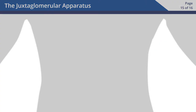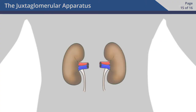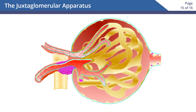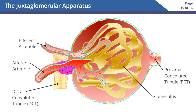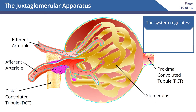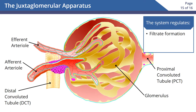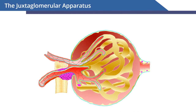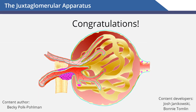In conclusion, the juxtaglomerular (JG) apparatus is a structure in the kidneys that regulates the function of each nephron. The system as a whole regulates filtrate formation and systemic blood pressure. Congratulations, you have completed the juxtaglomerular apparatus video.